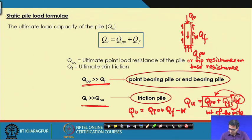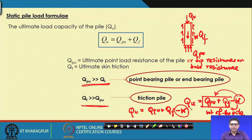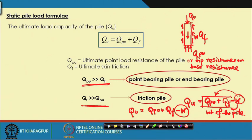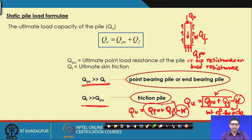There is a correction — the weight is subtracted, not added. In this course, when I solve problems, I will not consider the weight of the pile; but remember that if the pile weight is significant compared to the summation of Qpu + Qf, then you have to subtract it. The ultimate load carrying capacity should be the resistance from these two forces minus W, because it has to resist the weight of the pile itself.